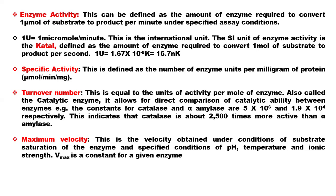So when we talk about the quantity of enzyme required to convert each micromole of the substrate — the reactant — to product per minute under specified assay conditions, these conditions can be the optimum pH, temperature, and ionic strengths. There is also what we call a unit of an enzyme. One international unit (U) is equal to one micromole per minute.